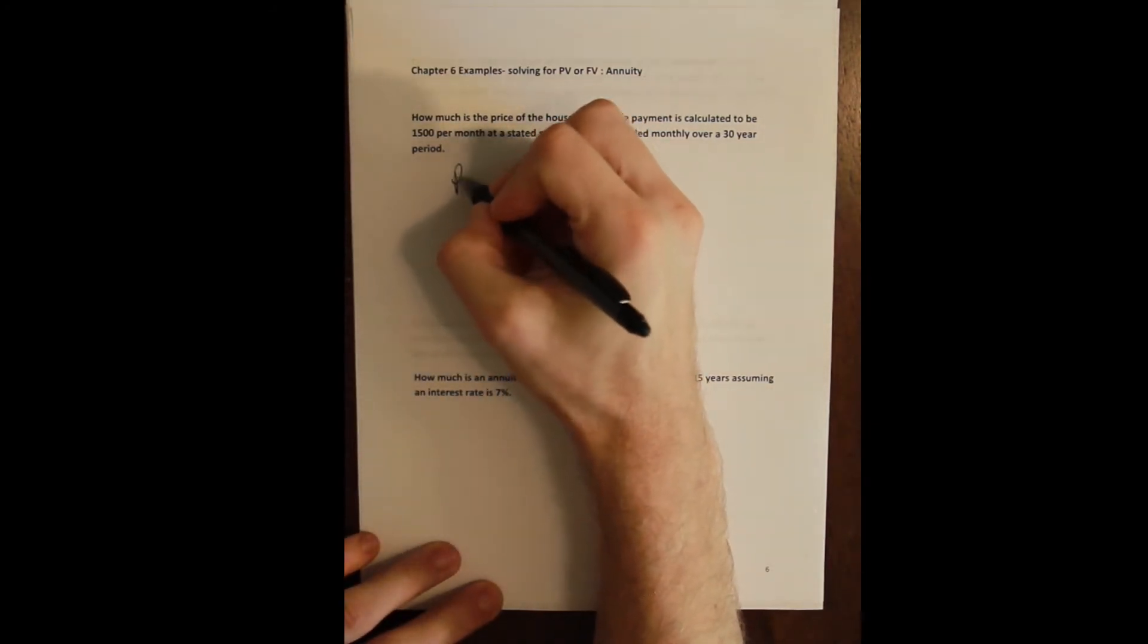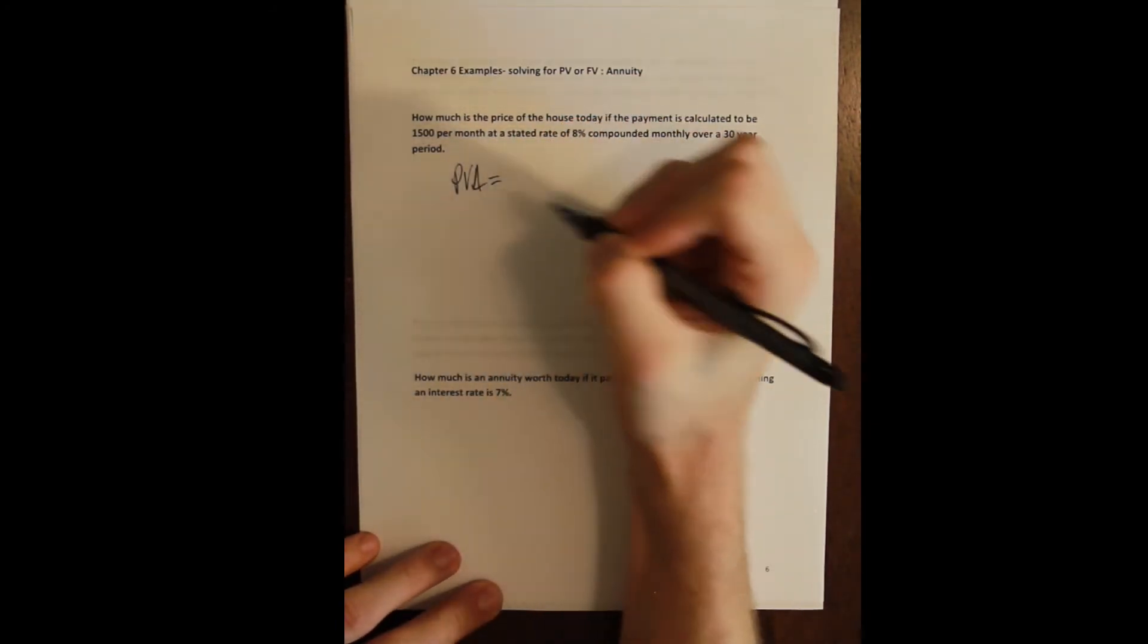And so we have a problem that says, how much is the price of a house today if the payment on the mortgage is calculated to be $1,500 per month at a stated rate of 8%, which is going to be compounded monthly over a 30-year period. Okay, so we've got a little bit to unpack here, but first let's just take a look at the formula.